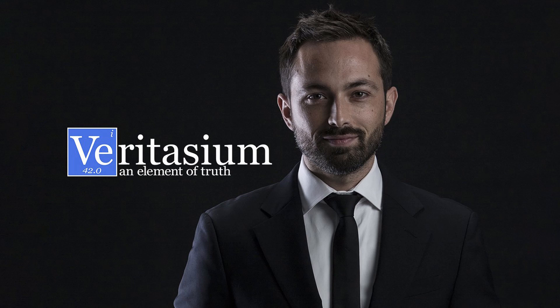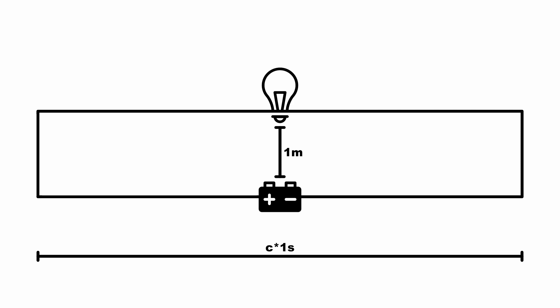A while ago Veritasium uploaded a video about how electricity really works. The basic setup is that we have a light bulb and a battery 1 meter apart, which are connected by a wire that is 1 light second long.